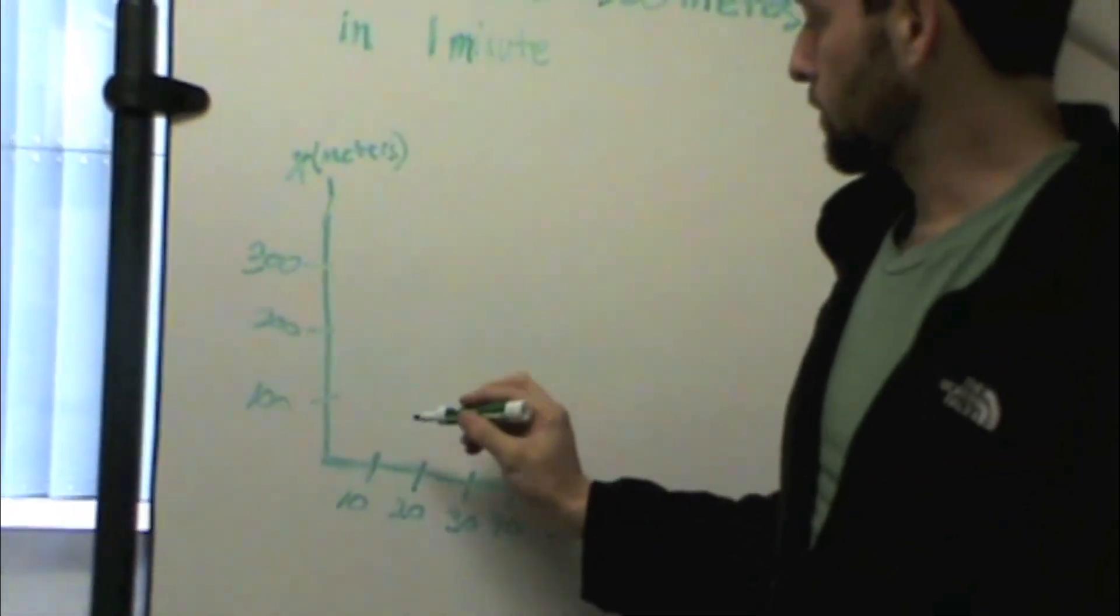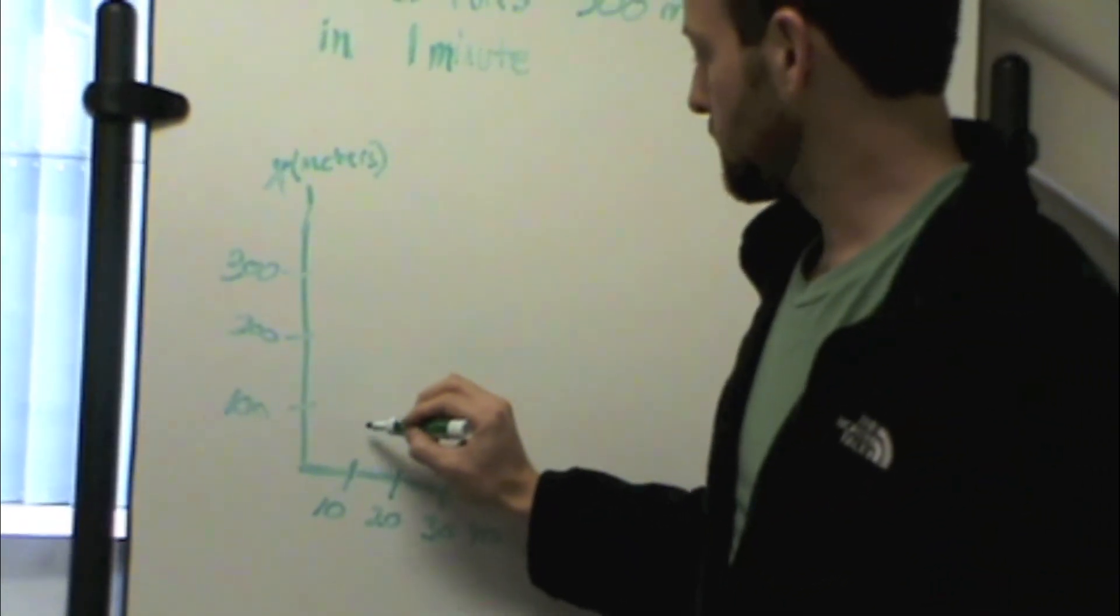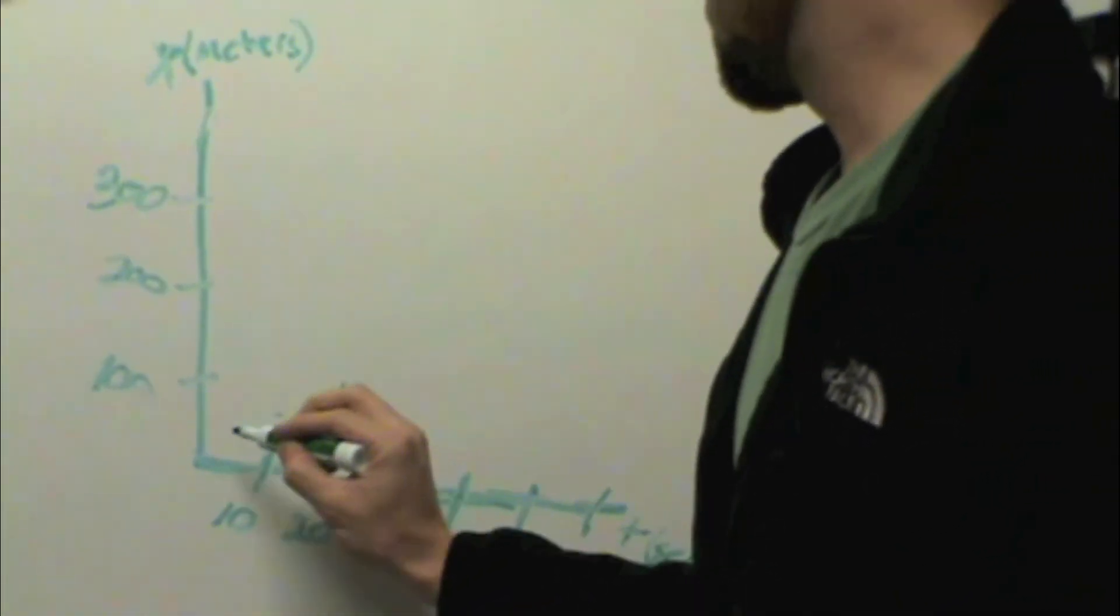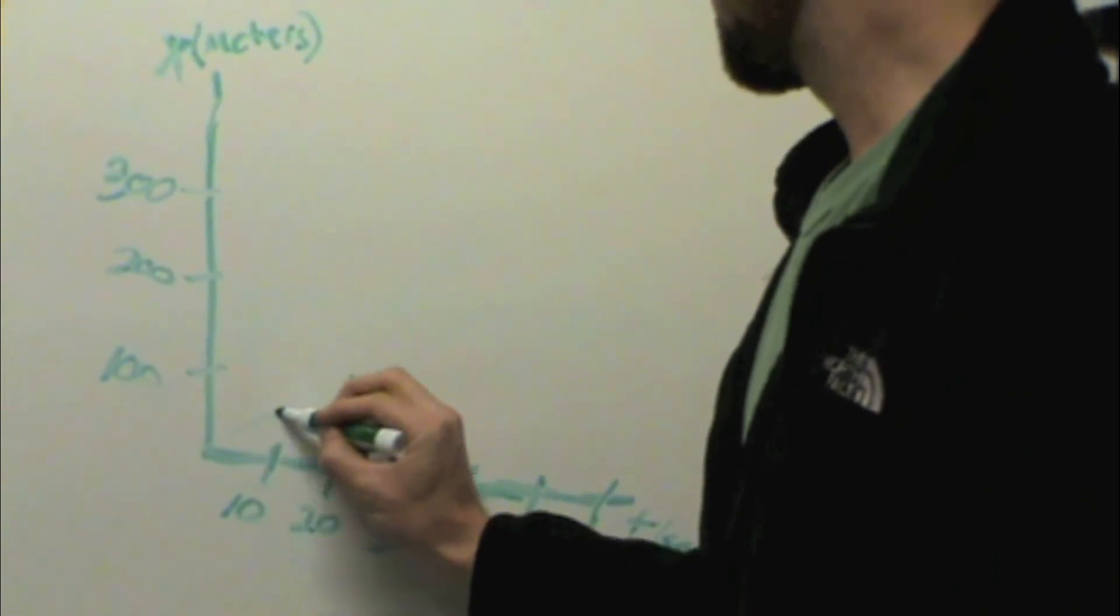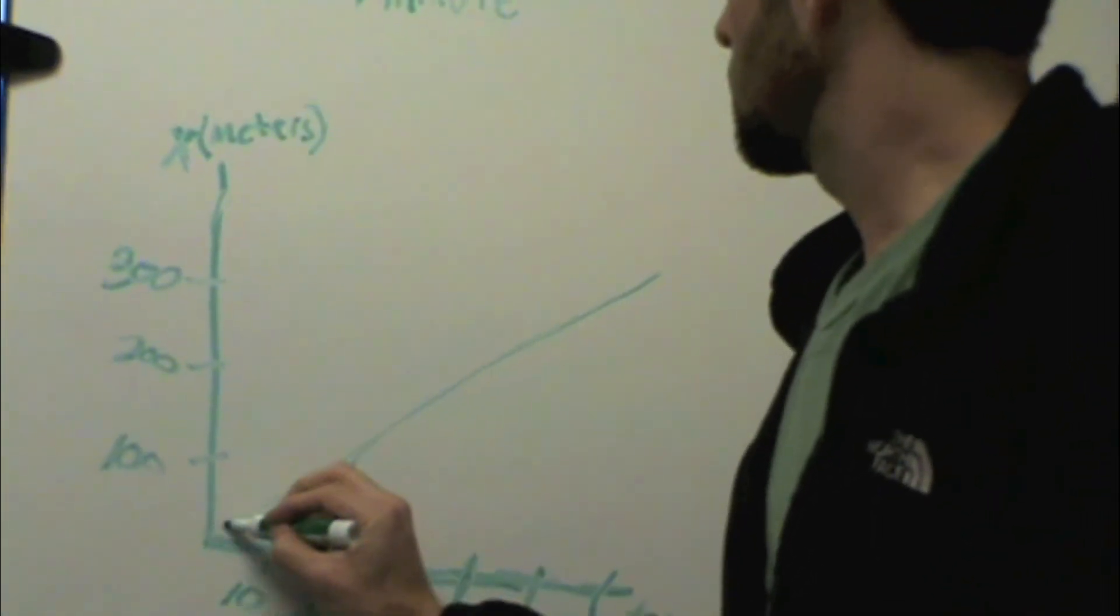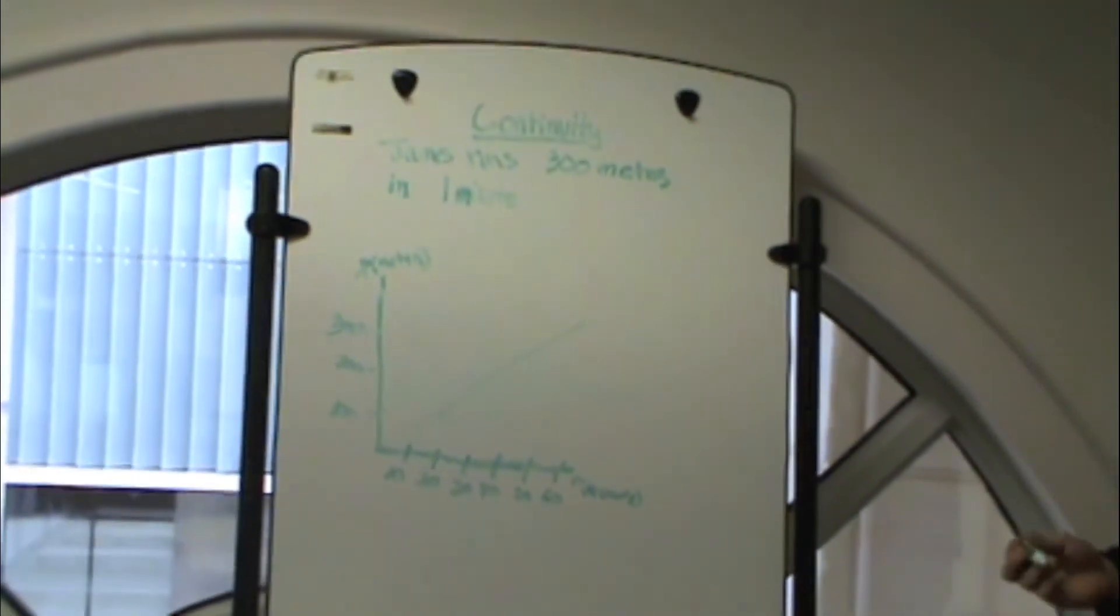Basically when this breaks down, every ten seconds he's running fifty meters. So if we draw the points, it's going to give us basically a line that's going to go straight up to here. And as you can see, there's no breaks in there.